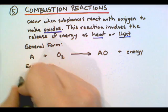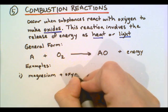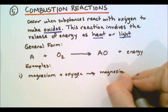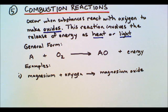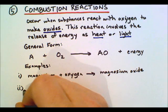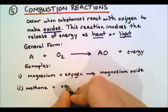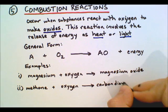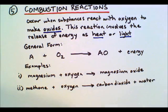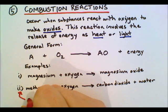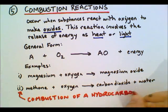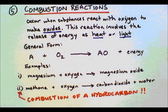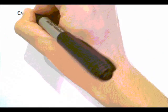When writing reactions we don't usually include the energy, though in more advanced chemistry you might. Our first example is magnesium and oxygen creating magnesium oxide — you probably saw this in grade 9 using a Bunsen burner to light magnesium on fire. Our second example is methane and oxygen: a hydrocarbon reacted with oxygen. A hydrocarbon when combusted will always create carbon dioxide and water. This special type is called combustion of a hydrocarbon. We're going to look at hydrocarbons in a bit more depth.